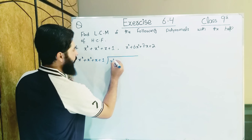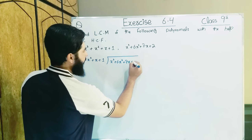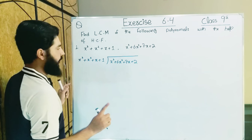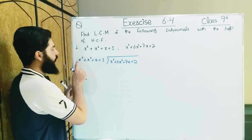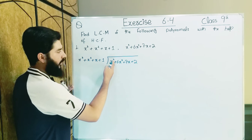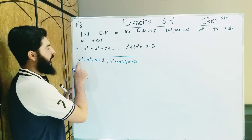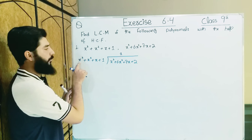Here we have a number that will multiply this with this, and the first number we have to cancel. We need a value or alphabet which will multiply with x³. Remember that we have to cancel the first value. Here we have x³.